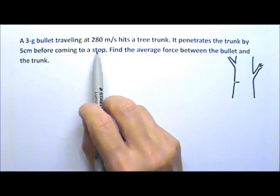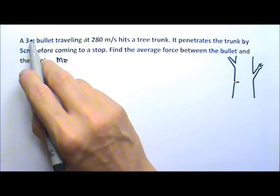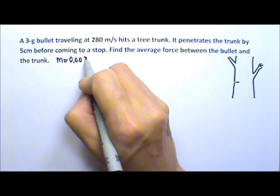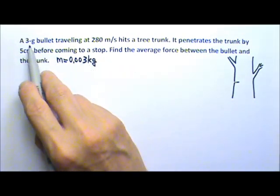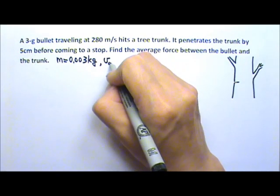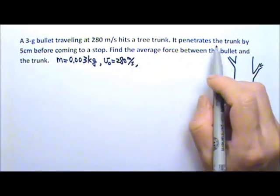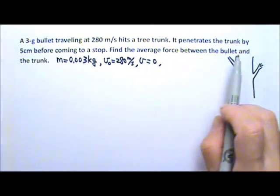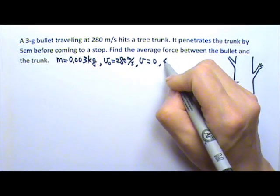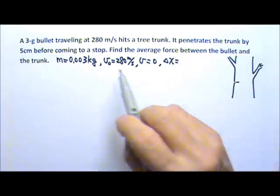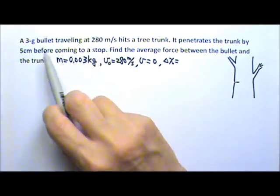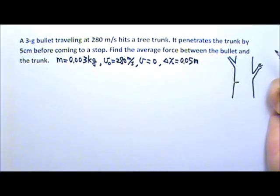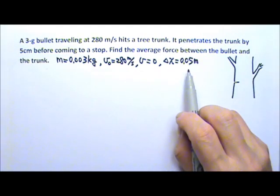In this problem we're given a few things. The mass of the bullet is 3 grams, but that's not the standard unit. To convert to standard units, that's 0.003 kilograms, because 1 kilogram equals 1,000 grams. The initial velocity of the bullet is 280 meters per second, and since it gets stopped, the final velocity is 0. It enters the tree trunk by 5 centimeters, so the displacement is 5 centimeters. Converting to meters, that's 0.05 meters, because 1 meter is 100 centimeters, so 1 centimeter is 0.01 meter.